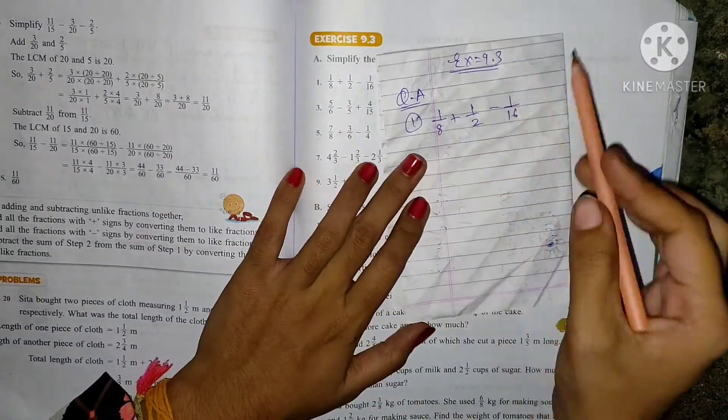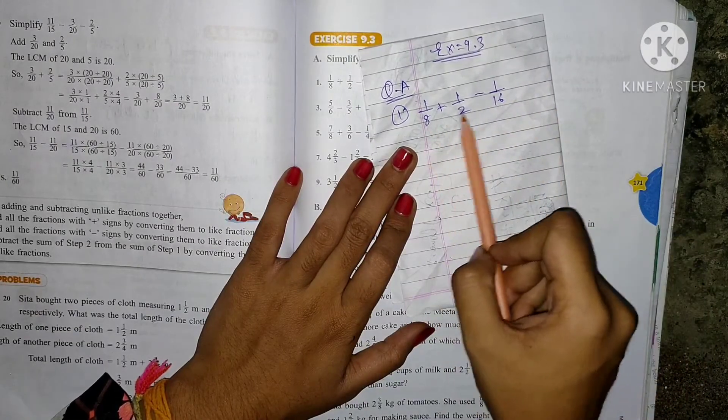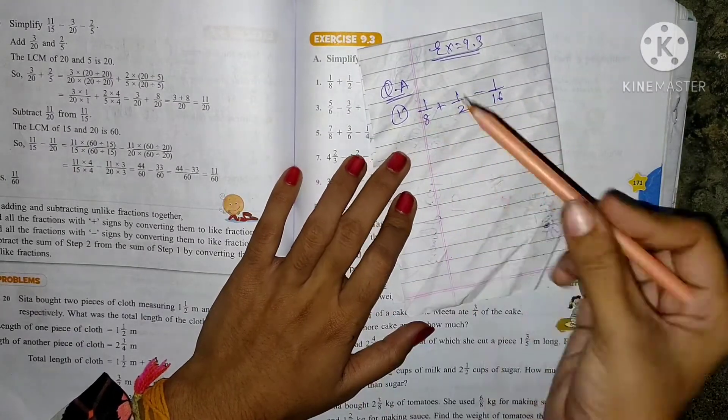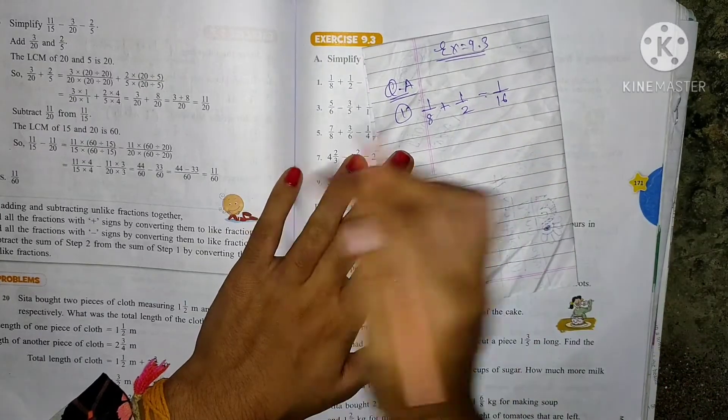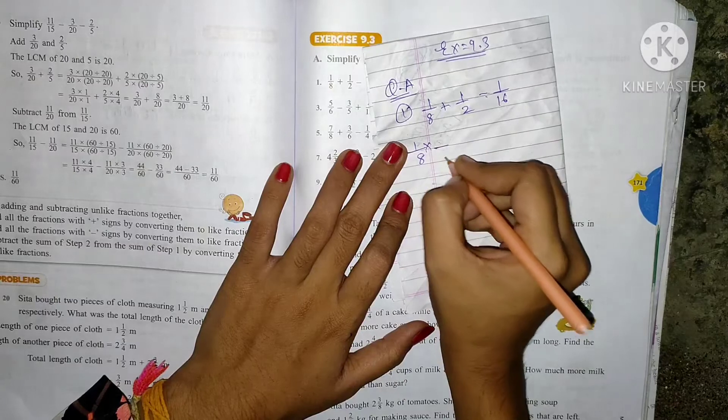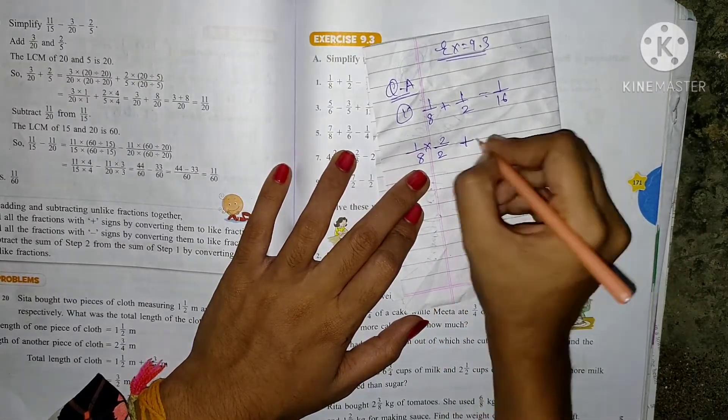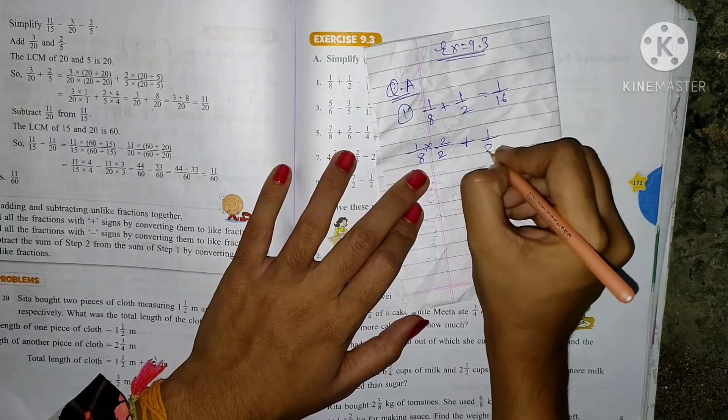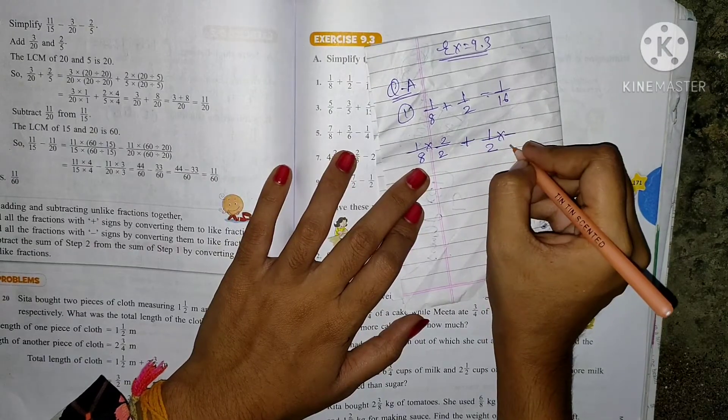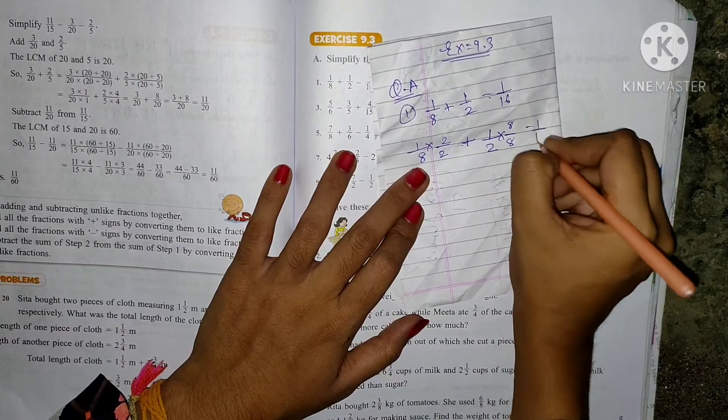Now instead of doing LCM, students tell me, in this the biggest LCM is of 16, and both of these come in its table. So what do we have to do? We have to make the denominator 16. So 1 by 8 - what will you multiply 8 by to get 16? By 2. So if you do it by 2 below, you'll have to do it by 2 above also. Then plus sign. 1 by 2 - what will you multiply 2 by to get 16? By 8. If you do it by 8 below, you'll have to do it above also, right?